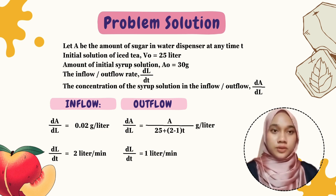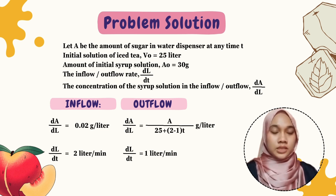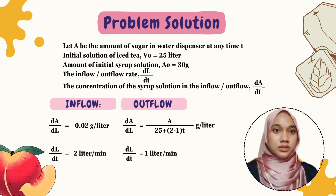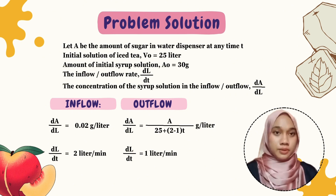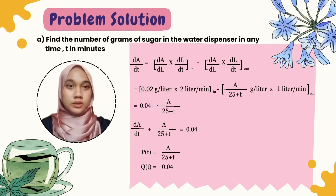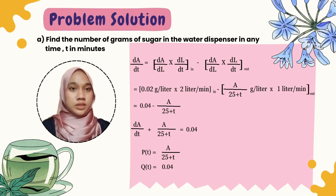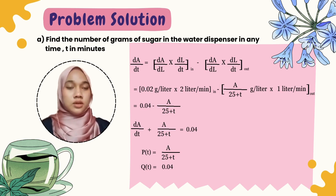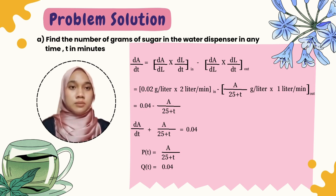For the outflow, the concentration dA/dL equals A divided by (25 + t) grams per liter, and the flow rate dL/dt equals 1 liter per minute. With this information, we can now form the solution for part A: finding the number of grams of sugar at any time t.